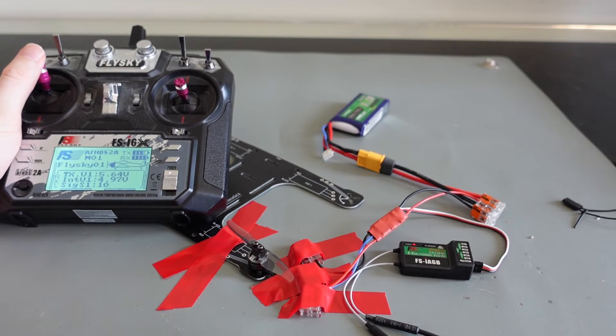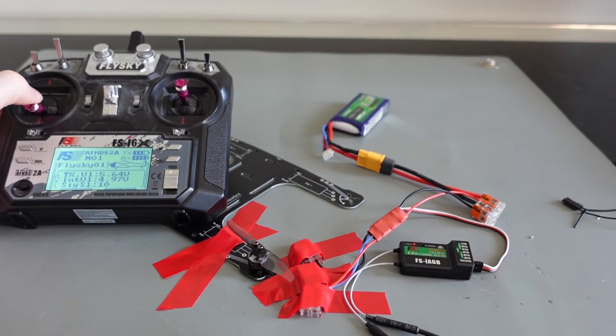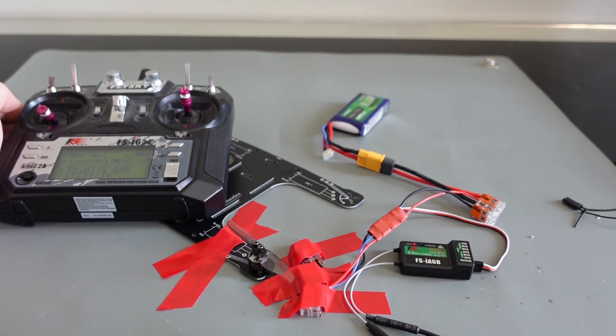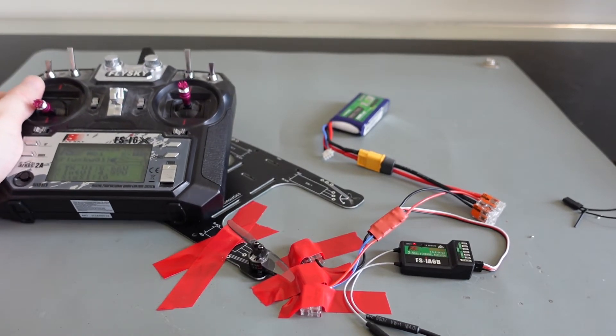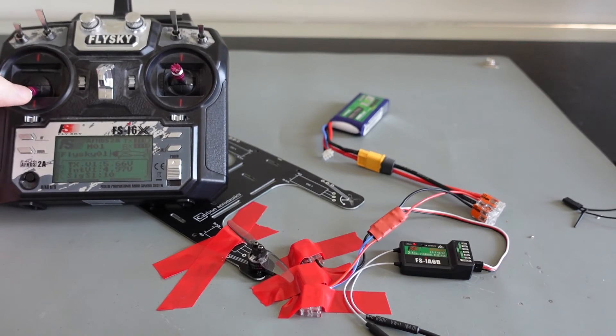Move the throttle stick to its lowest position between the first and the fourth beep. After two seconds, the ESC should give two times two beeps indicating that calibration is finished.